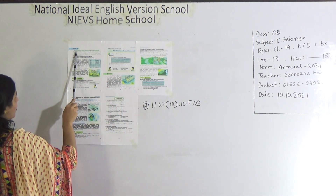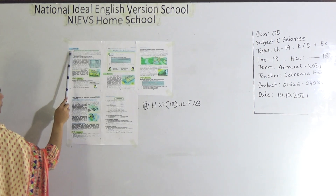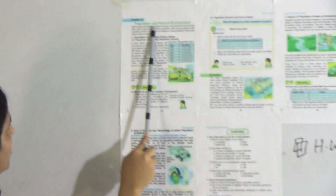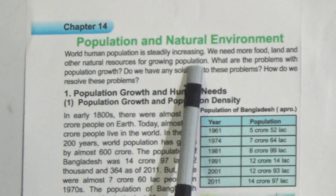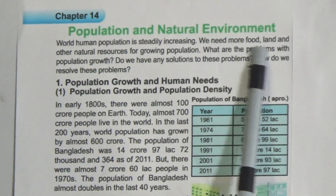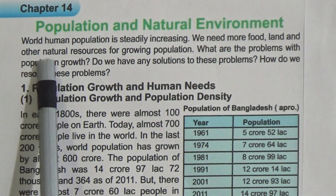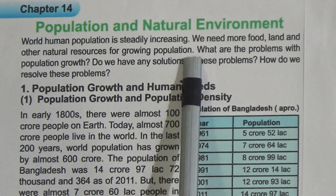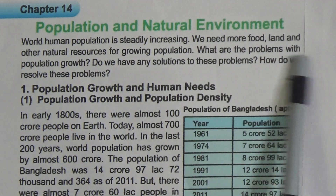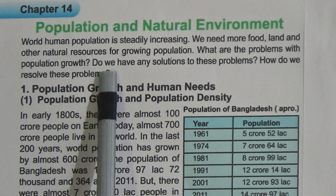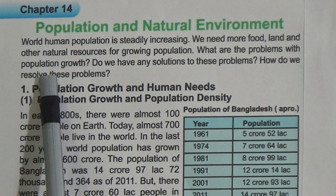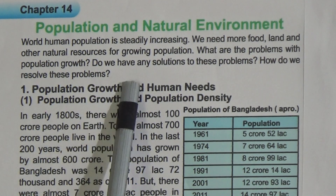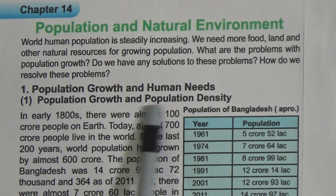Today's topic is chapter 14. The name of chapter 14 is 'Population and Natural Environment.' World human population is steadily increasing. We need more food, land, and other natural resources for the growing population. What are the problems with population growth? Do we have any solution to this problem? How do we resolve these problems?